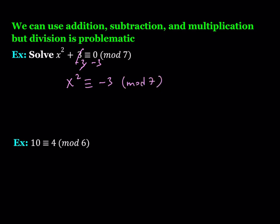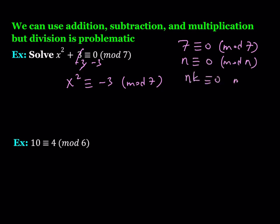Let's solve this equation. Since I can subtract 3 from both sides, this gives me x squared is congruent to negative 3 mod 7. Obviously negative 3 as a perfect square doesn't make sense, and we're going to keep it in the reals. So x squared is congruent to negative 3 mod 7. I can add 7 to both sides because 7 is congruent to 0 mod 7 — the difference between 7 and 0 is divisible by 7. So n is always congruent to 0 mod n, and more generally, any multiple nk is also congruent to 0 mod n.